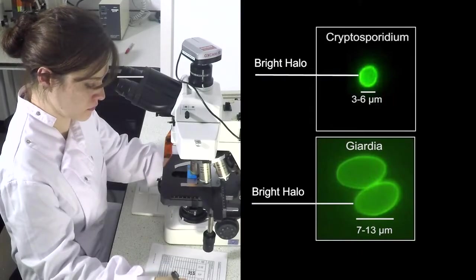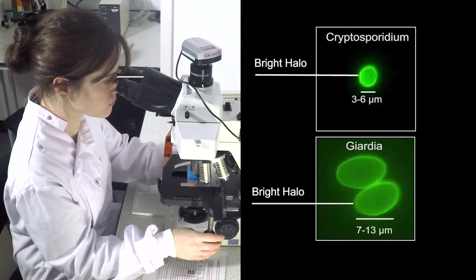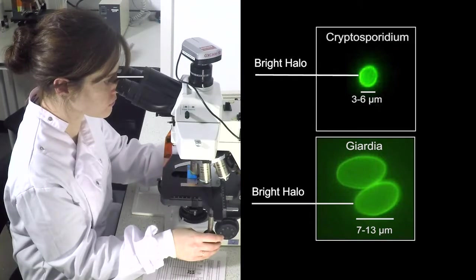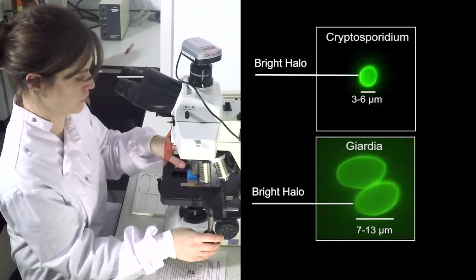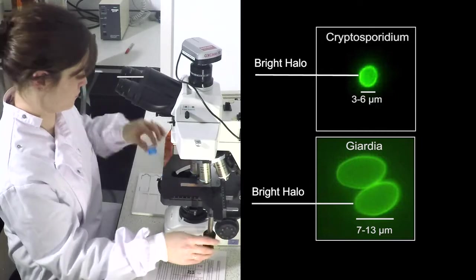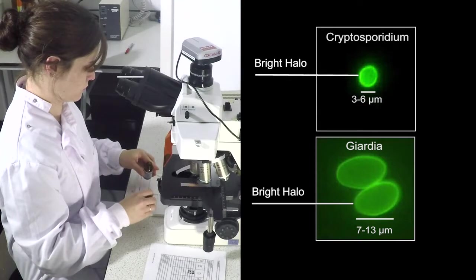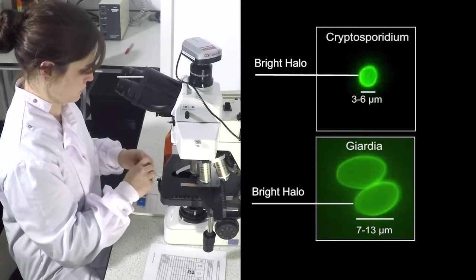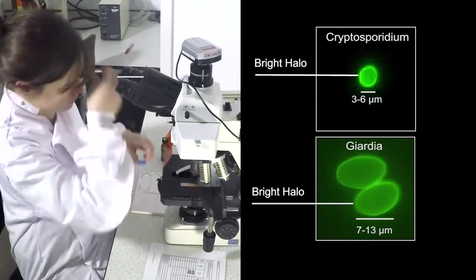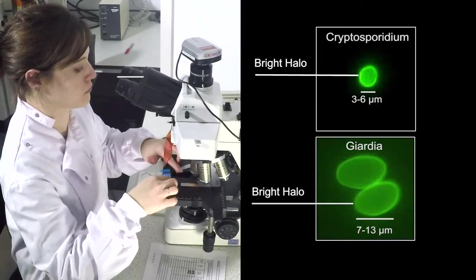Cryptosporidium oocysts and Giardia cysts should be initially identified using FITC. Analysis for characteristic FITC staining should be performed at at least 200 times magnification. Bright apple green fluorescence, halo effect, size, and shape should be noted.